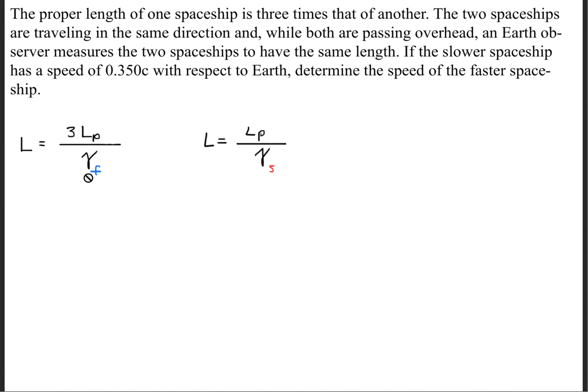So for the spaceship, for the small spaceship to be equal in length to the big spaceship, we'd have to multiply it by a factor of 3. So hopefully that makes sense. The next thing we'll do is we'll set these expressions equal to each other because they both share this L variable, so we can just make our substitution right here.